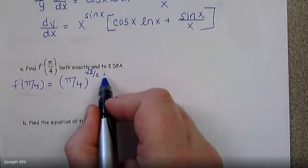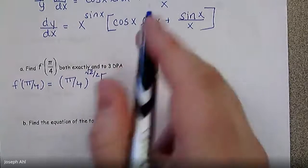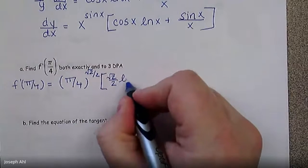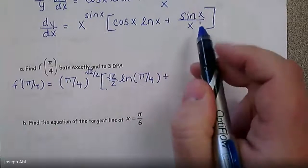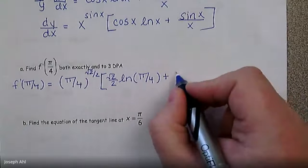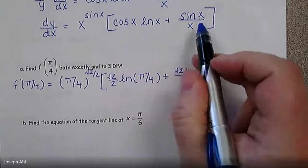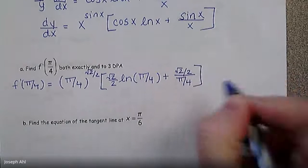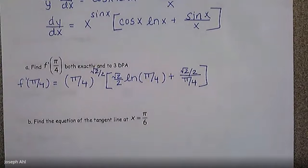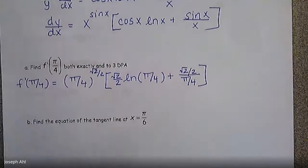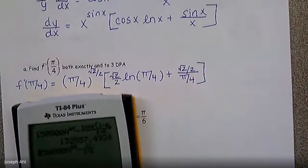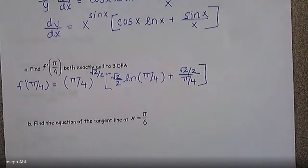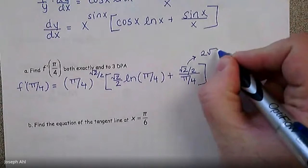On the inside, we multiply by cosine of pi over four — which is also radical two over two — times the natural log of pi over four. Plus, sine of pi over four is again radical two over two, divided by x which is pi over four. That is the very messy expression representing the exact slope of the tangent line when x equals pi over four. If you multiply by four on top and bottom, that complex fraction becomes two radical two over pi.